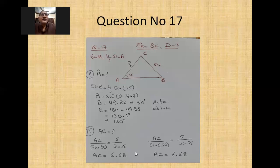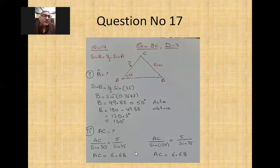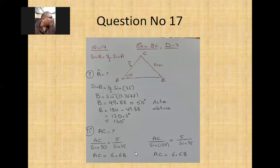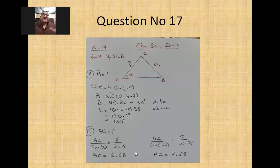Finding AC for both values of B. Using the sine rule: AC/sin(B) = 5/sin(35°). For B = 50°: AC = 5×sin(50°)/sin(35°) = 6.68 cm. For B = 130°: AC = 5×sin(130°)/sin(35°) = 6.68 cm. In both cases AC = 6.68 cm. This completes exercise 8C, covering questions 13–17 on the ambiguous case of the sine rule and triangle existence.